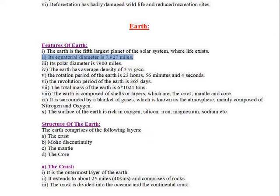Its equatorial diameter is 7,927 miles. Its polar diameter is 7,900 miles. The Earth has an average density of 5½ g/cc.